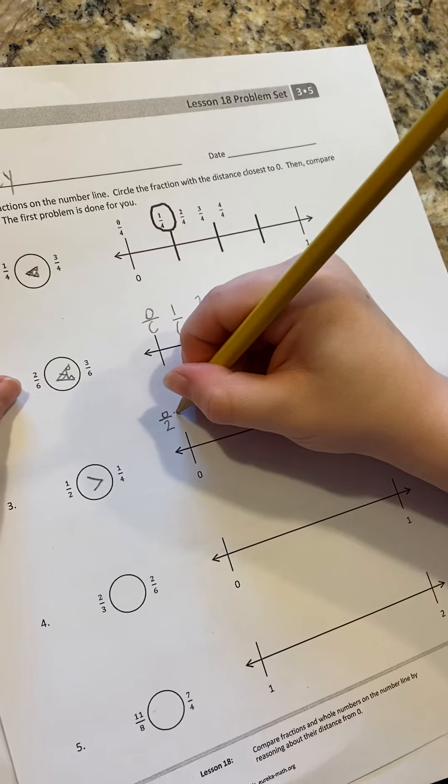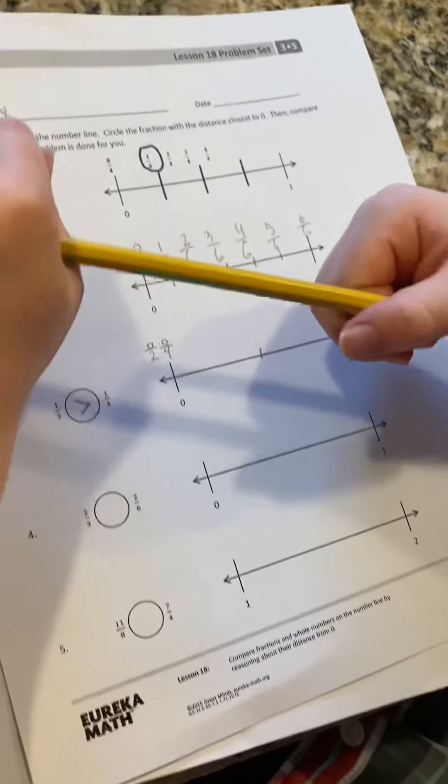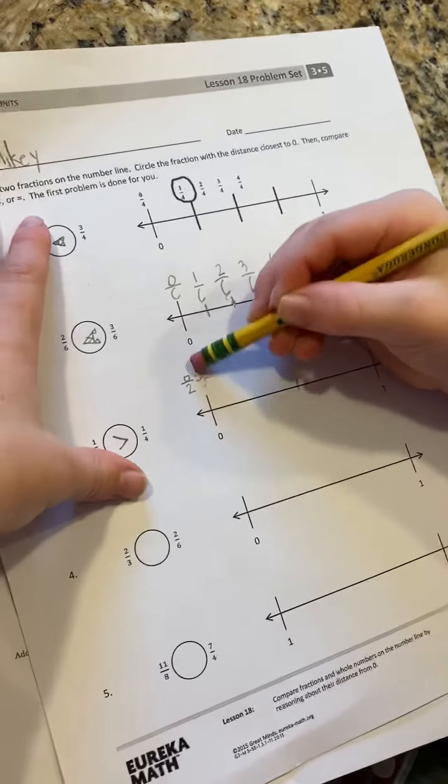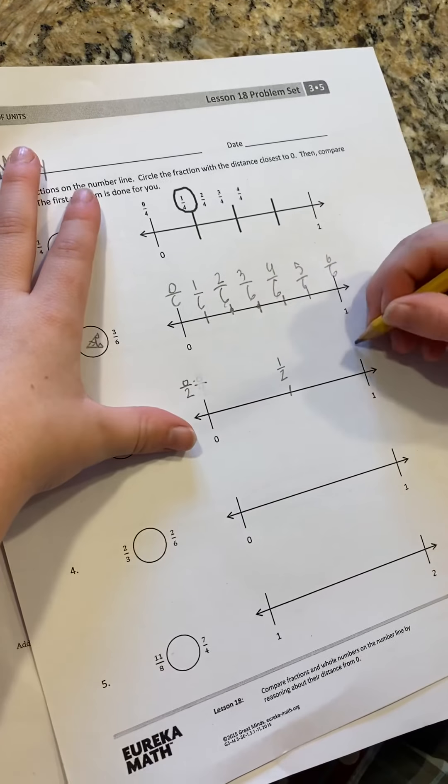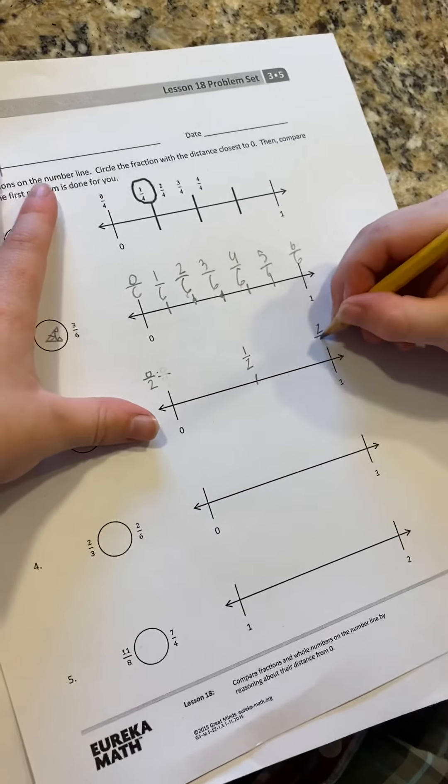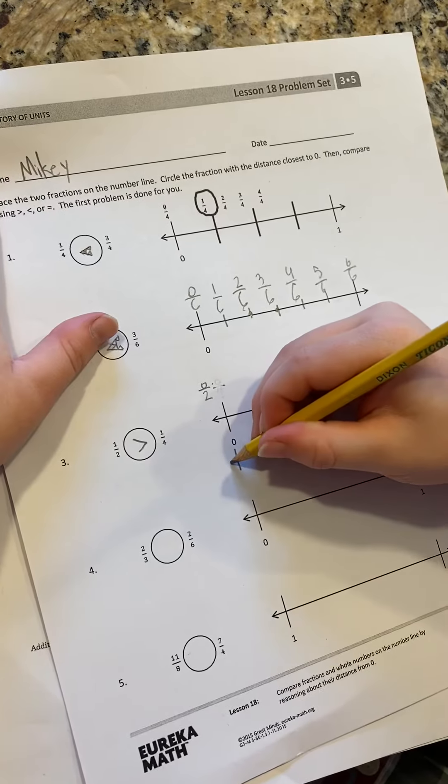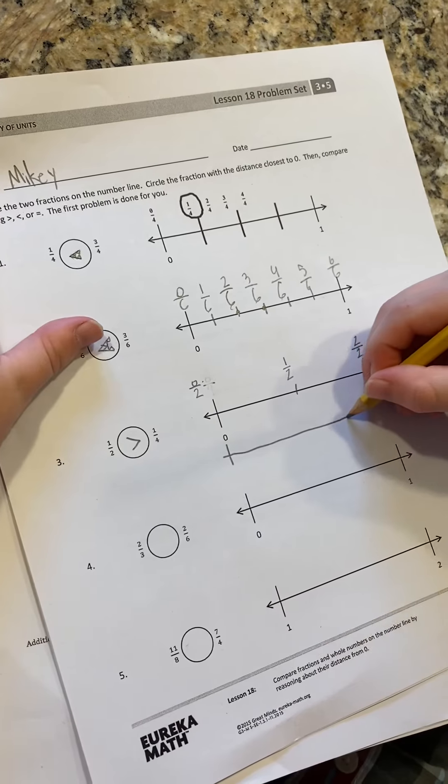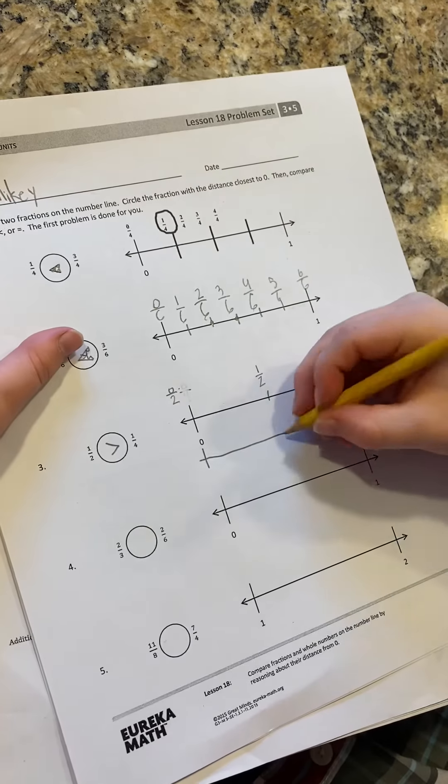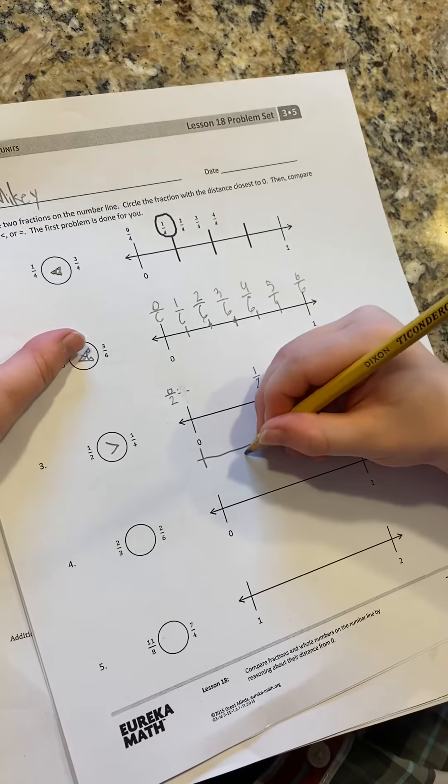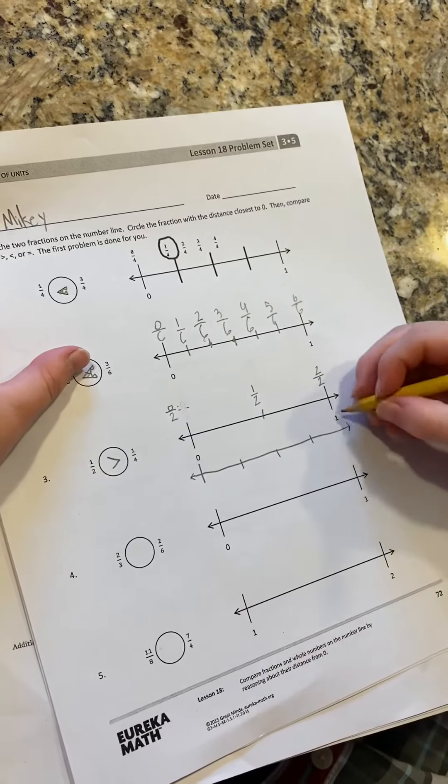Okay? Now, this next one looks like it has halves and fourths. So do me a favor. Let's start by labeling our halves. Good. Zero halves. Zero halves. One-half. I want to do zero-fourths, too. Well, I was going to have you do the fourths on the bottom. Let's keep them separate. There you go. So let's do our halves on the top.